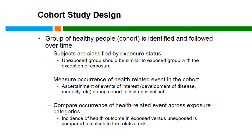In a cohort design, we're able to measure the occurrence or the incidence of the health outcome in the exposed and the unexposed population. The analysis of cohort studies allows us to compare the occurrence of the health event of interest across these exposure categories, and the estimate of the association is the relative risk — that is, the risk of the disease among the exposed compared to the risk of disease among the unexposed.